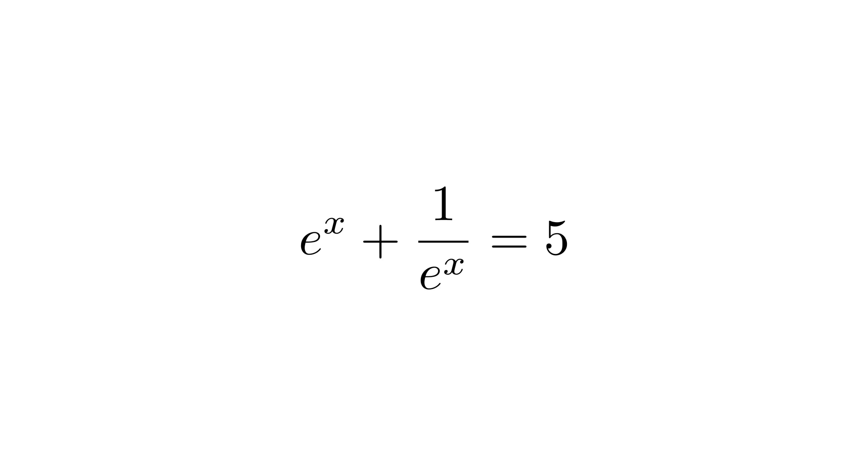Here's where things get interesting. Notice that e to the x appears in two places, once by itself, and once in the denominator of a fraction. This repetition is like a mathematical hint that we should try a substitution. This approach is incredibly powerful because it can reveal familiar structures, like quadratic equations, that are hiding inside what initially looks like something much more complicated.